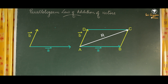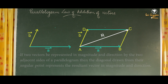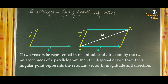Hence, the parallelogram law of addition of vectors states that if two vectors are represented in magnitude and direction by the two adjacent sides of a parallelogram, then the diagonal drawn from the angular point represents the resultant vector in magnitude and direction.